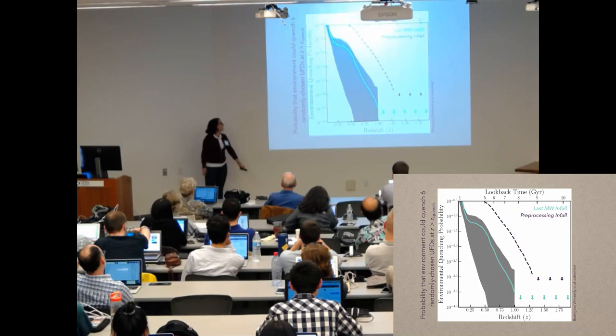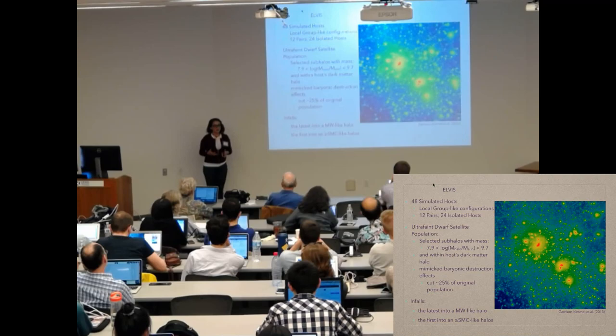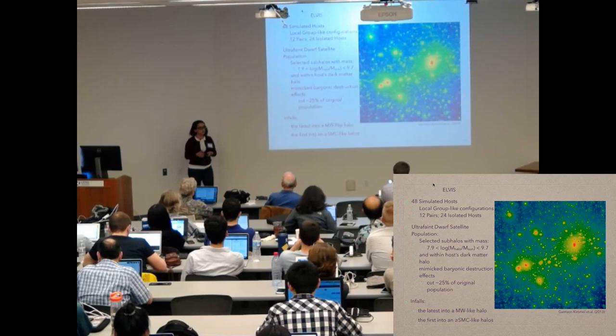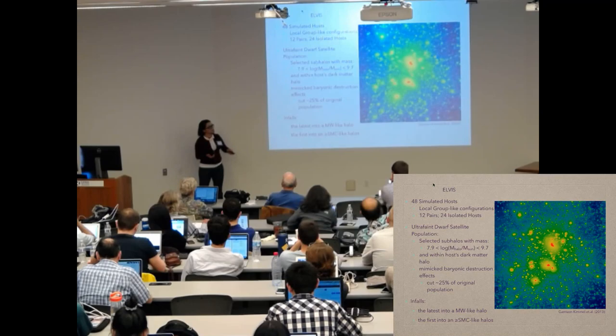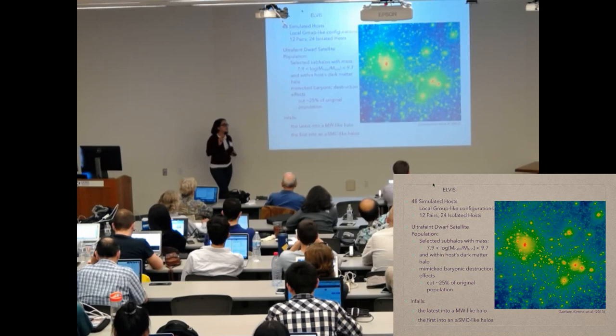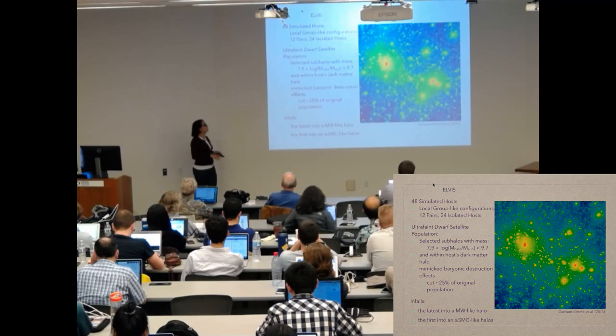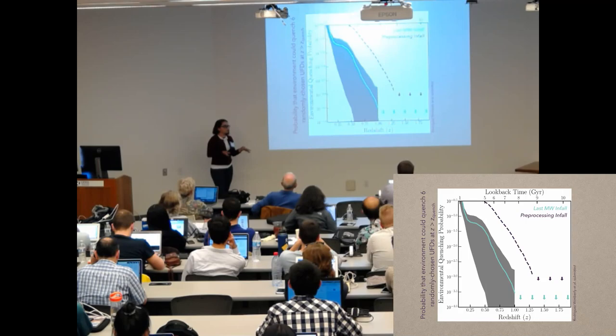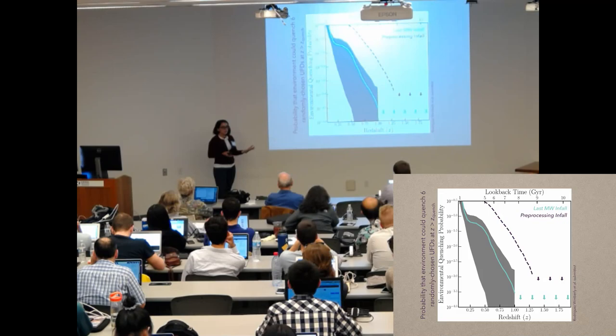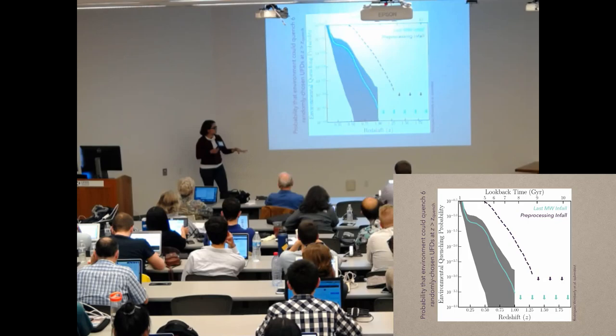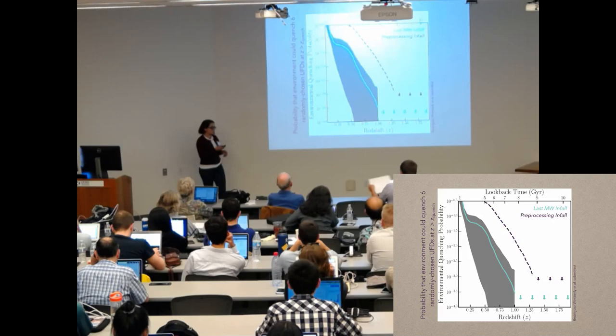So now with this trimmed down version, I look at infall of these subhalos. The two I focus on are the latest infall into the Milky Way-like subhalo, and then to talk about preprocessing, I look at the first infall of one of the subhalos into any dark matter halo that would house an SMC-like or greater galaxy. This is to talk about any environmental preprocessing that may have occurred. And so now what I do is play this game. Taking my cues off of Tom Brown's six ultrafaint dwarf galaxies, I go through my population and I randomly select six subhalos 10,000 times, and I calculate the probability that all six had fallen in by a given redshift.